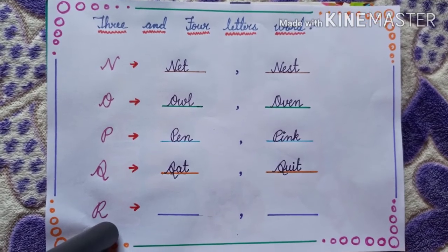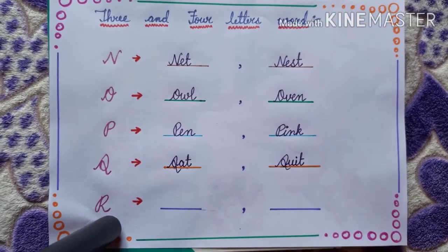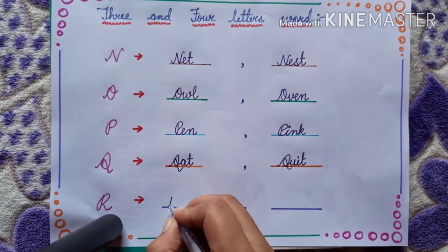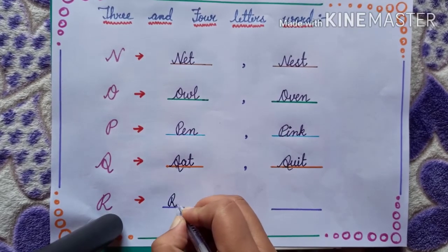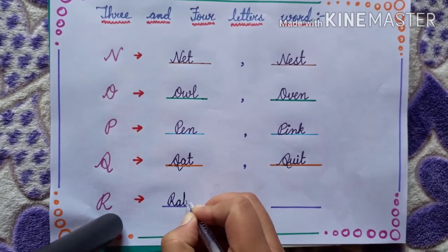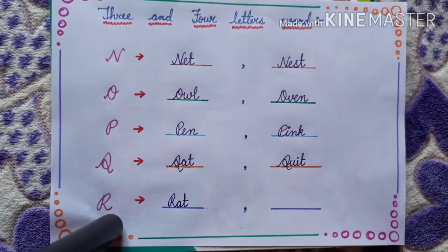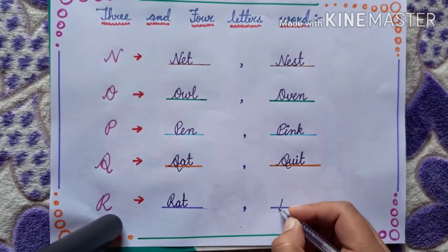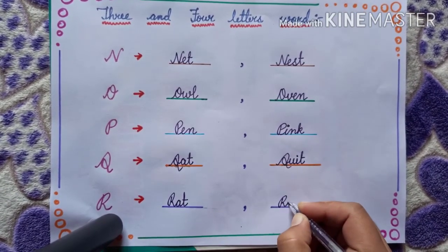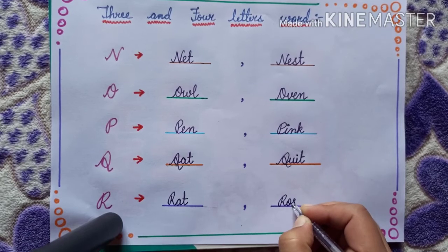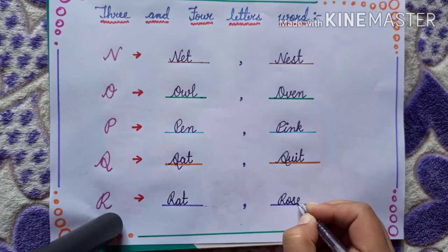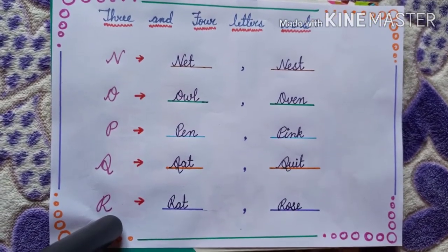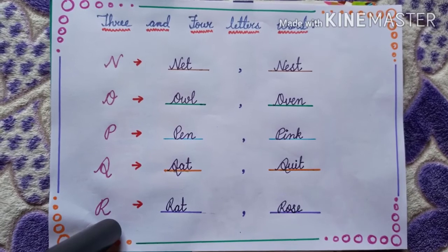And the last is R. R, A, T — red. R, O, S, E. R, O, S, E — rose.